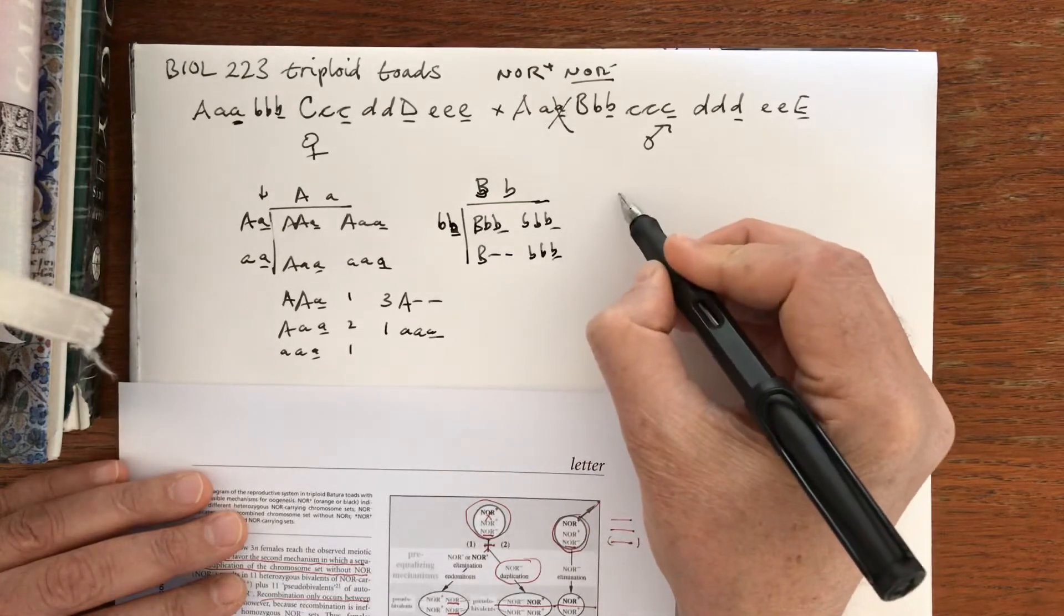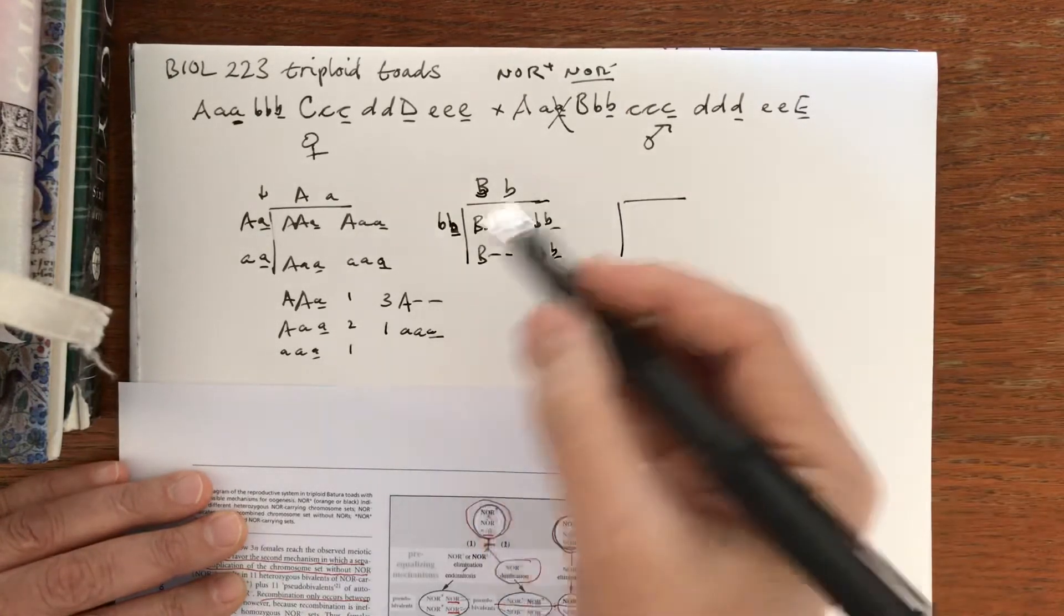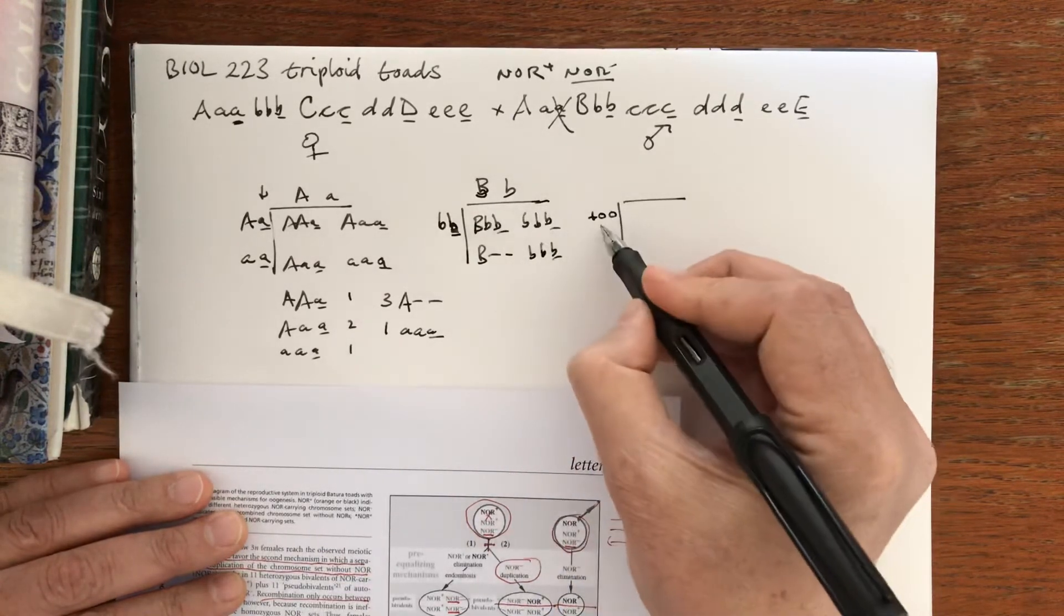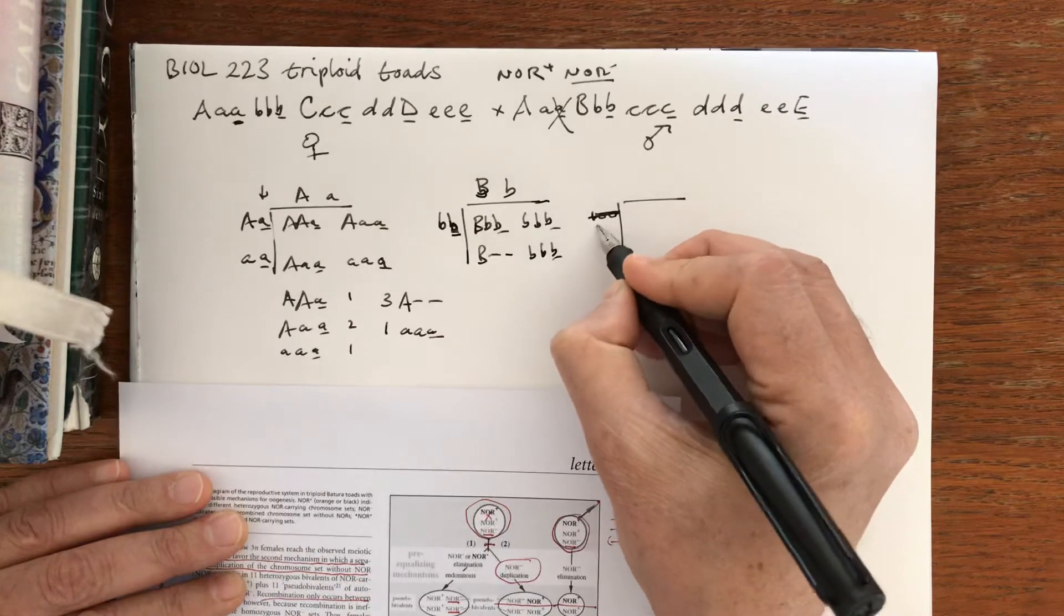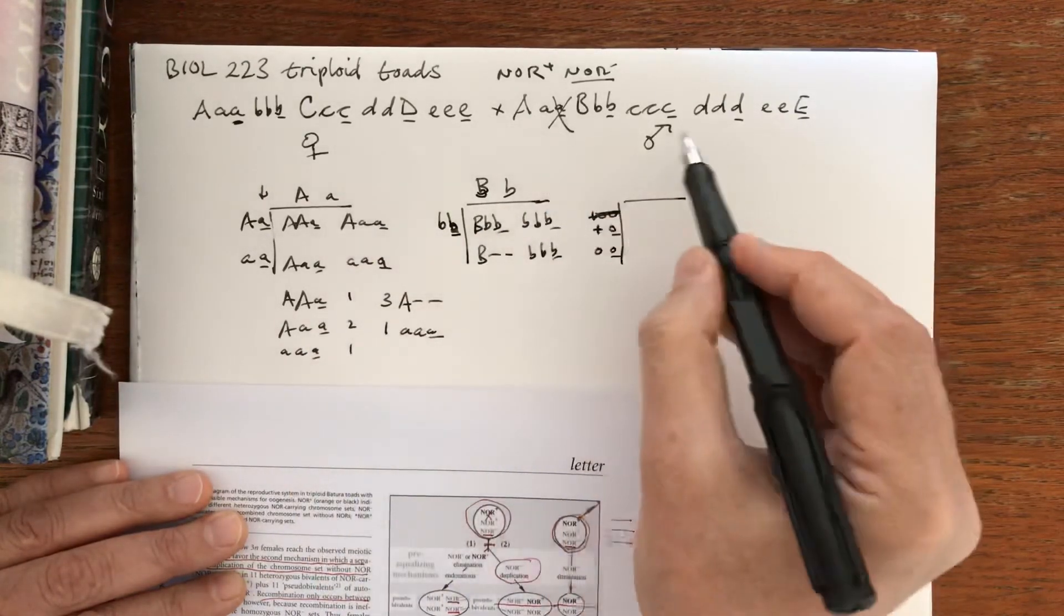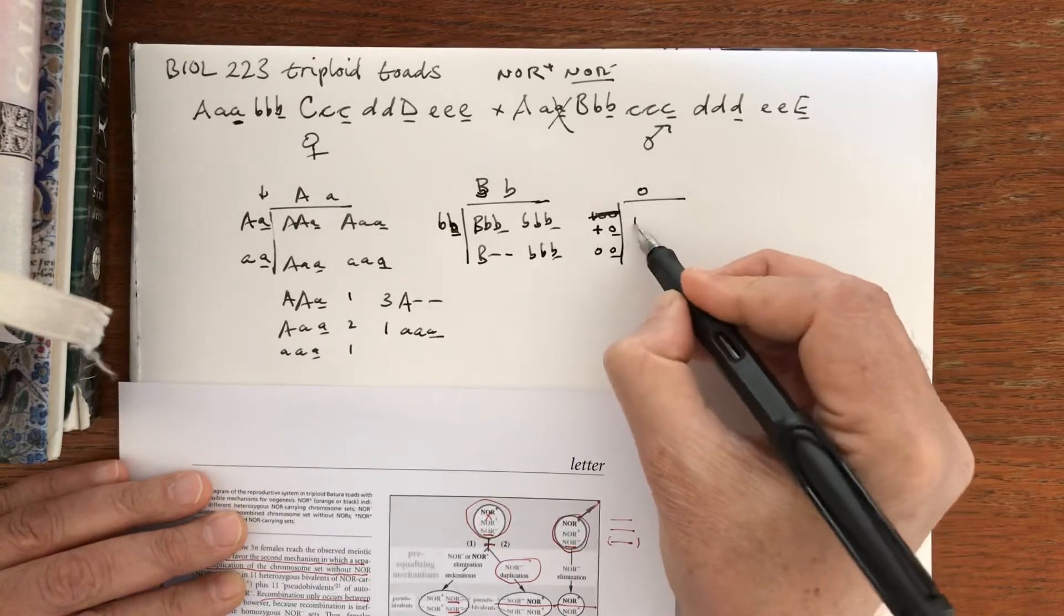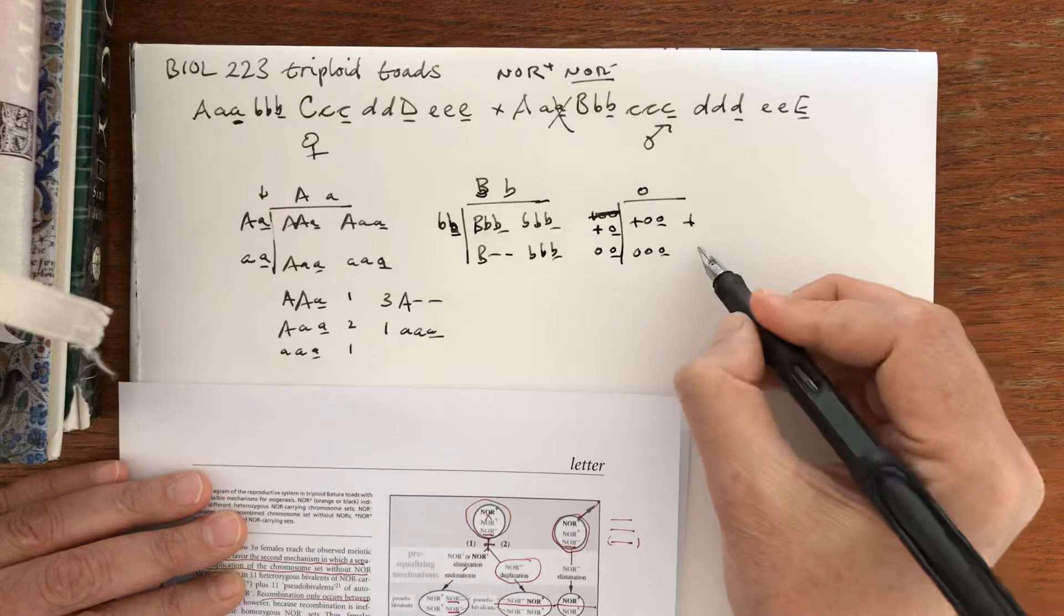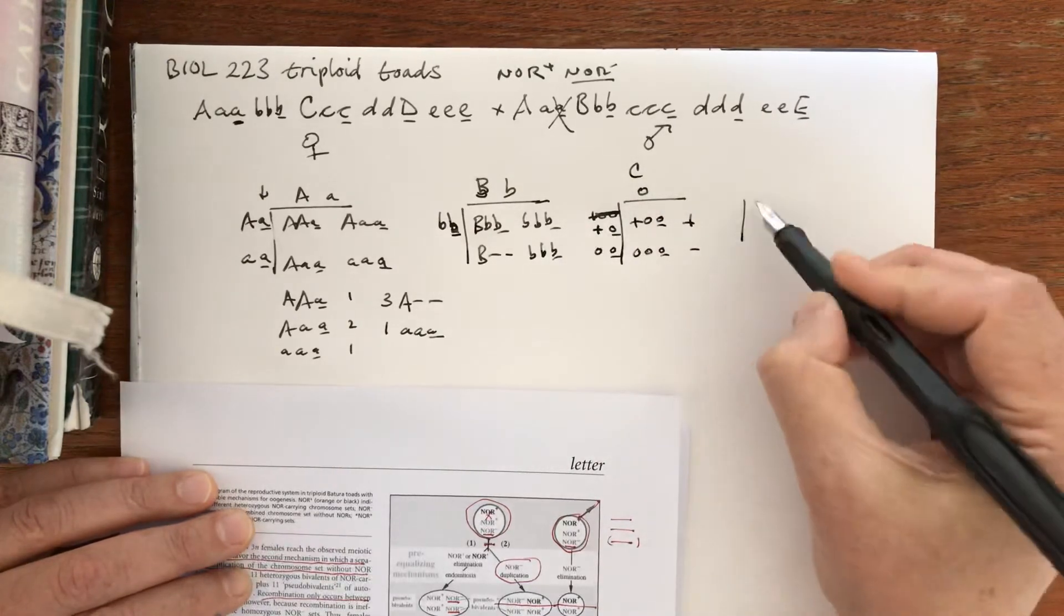At C we can see the female is going to be like A. In fact, we could generalize it and say for any time it's capital and dominant, I can call that plus. She's going to be plus null null, and she can make these kinds of gametes. I'm going to make it generic. The male can only make the null, so we're going to get plus null null underlined and null null null underlined, equal frequency. This will be functional, this will be recessive. Likewise at D, this is different. She can make one kind of gamete: little D big D. And the male can make only little d. So all of them will be little d little d big D, and that will be phenotypically functional.